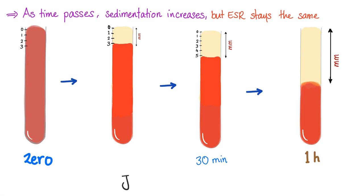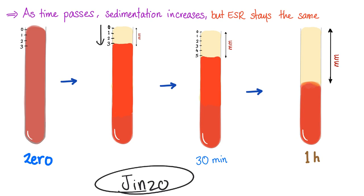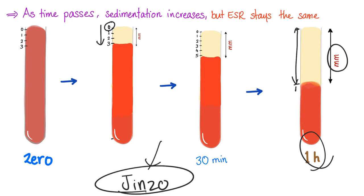In my previous video on ESR, I made a mistake. My friend Jinzo in the comments pointed out that we measure ESR from the top — zero is at the top, not the bottom. Thank you so much! As time passes, the red blood cells go down — called sedimentation — until they rest. Then you measure the distance from top to the plasma-cell interface, reported in millimeters per hour. That is your ESR.